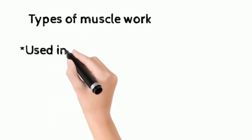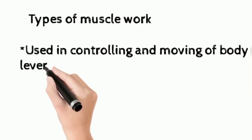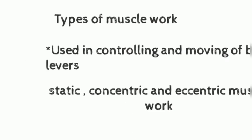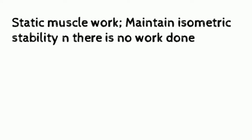It is of three types: static, concentric, and eccentric muscle work. Static muscle work: muscle contracts isometrically to counterbalance opposing force and maintain stability. There is no movement and there is no work done.